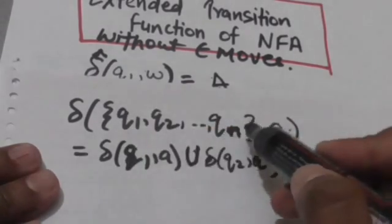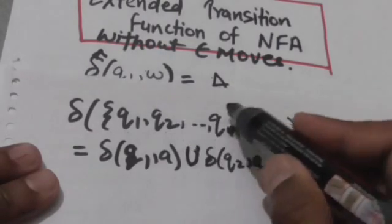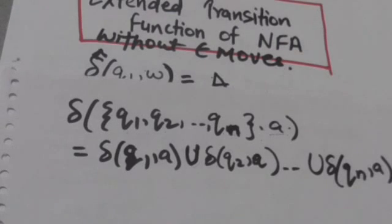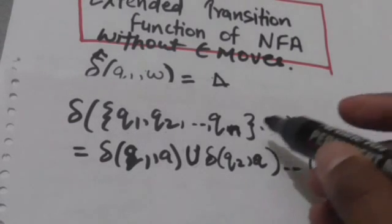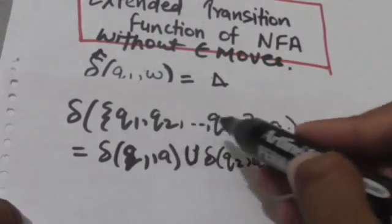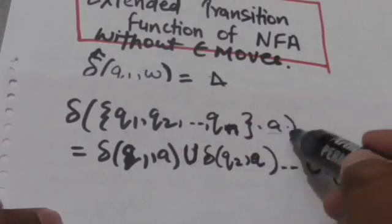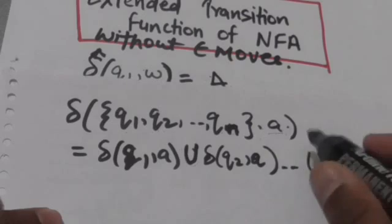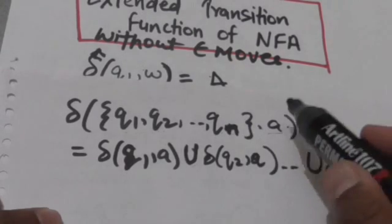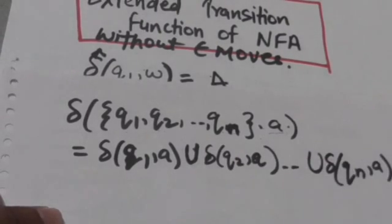For example, suppose there is a set of n states: q1, q2, q3, q4, q5, up to qn. We have to find out the transition of this set of states for input symbol a. We will apply a individually to each state of this set — we will apply a to q1, q2, q3, and so on up to qn — and then we will take the union of all of them.